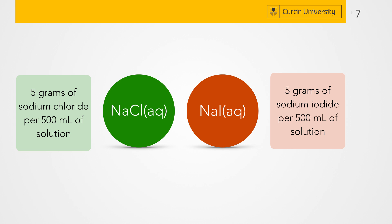However, we cannot apply the same logic when looking at two solutions with different solutes — it's like comparing apples and oranges. For example, sodium chloride and sodium iodide. When we weigh out the same mass of these chemical species, we have a different quantity of ions for the same mass, because one mole of sodium iodide weighs more than one mole of sodium chloride. So we need to use the equivalent form of molar concentration, of moles per litre, which ensures that we can compare apples with oranges.